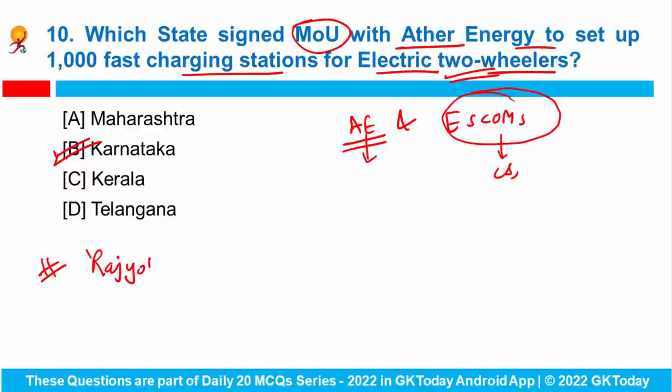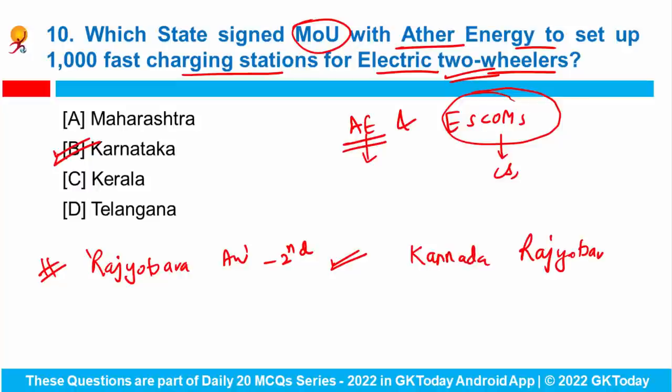Apart from it, the Rajyotsava awards are the second highest civilian honour of Karnataka, awarded on the occasion of the establishment of the state celebrated as the Karnataka Rajyotsava. The state announced it will skip the process of calling applications for Rajyotsava awards; instead, the state will set up a committee tasked with finding achievers.